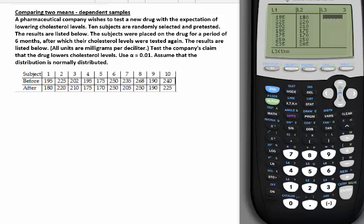Let's read the question, and as we progress on the question, I'll explain why the two samples in this case are dependent. A pharmaceutical company wishes to test a new drug with the expectation of lowering cholesterol levels. Ten subjects are randomly selected and pre-tested, so they were pre-tested before they take the new drug.